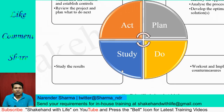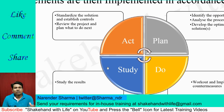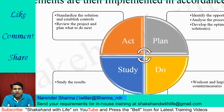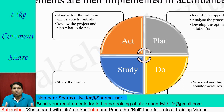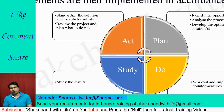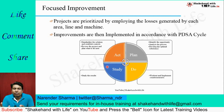In the Do section, work out and implement the countermeasures. Then come to the Study section — after taking the countermeasures, study the results. If the results are motivating, standardize the solution and establish the controls. Then review your project to see how much you achieved and plan for the next project. This is the way you can implement focused improvement.